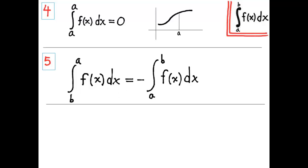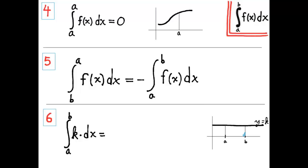Property six: the integral from a to b of k times dx, where k is a constant. You could figure this out by looking at a graph of the curve y equals k. It's just a rectangle, and its value is k times b minus a.